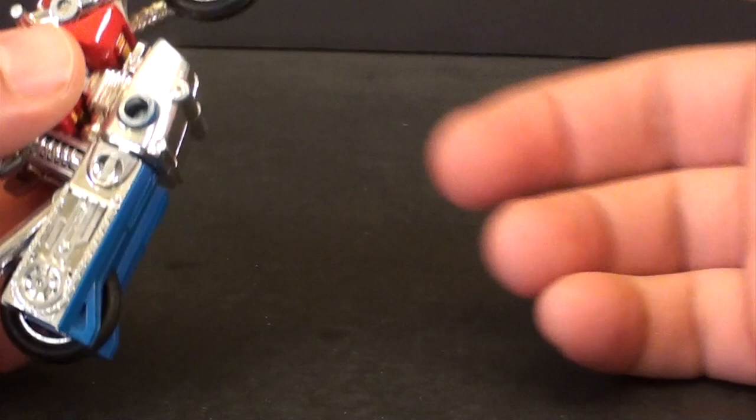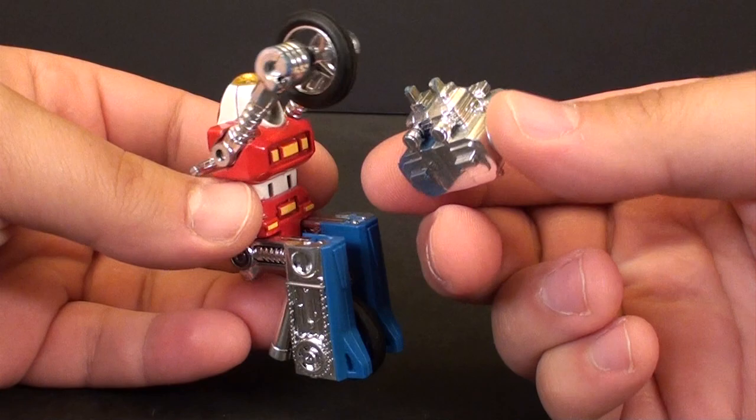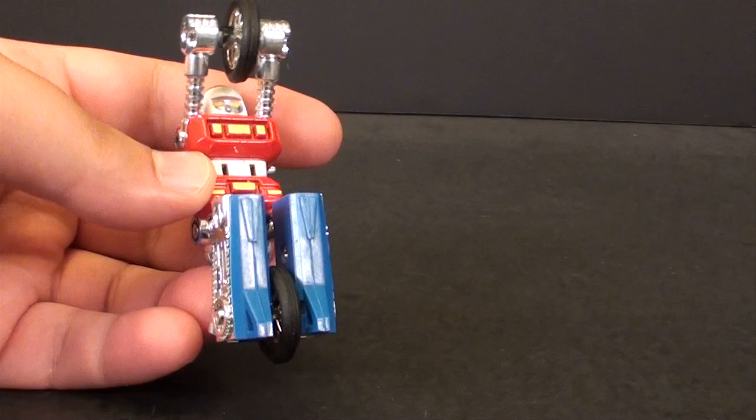Transforming this guy is super simplistic, as you would expect. You pull off the engine piece here that just clips right into the bottom, and you put this somewhere where you're not going to lose it.